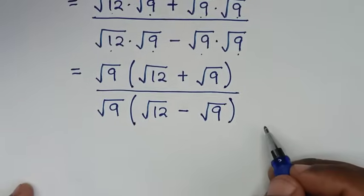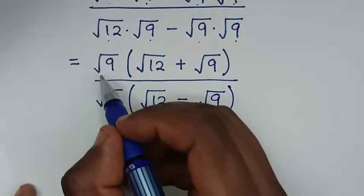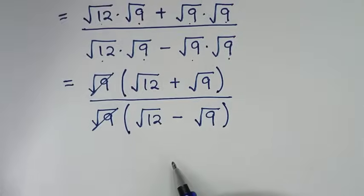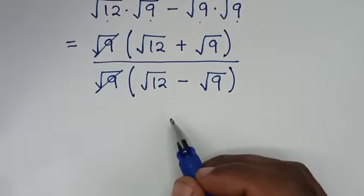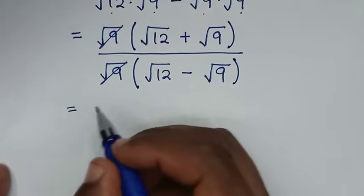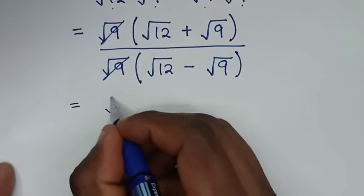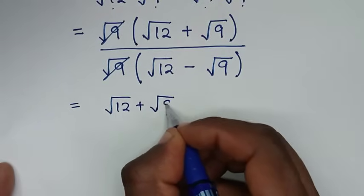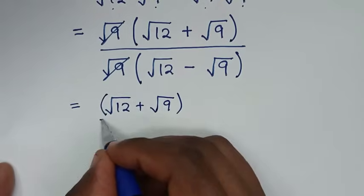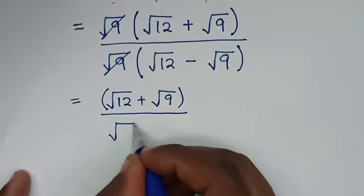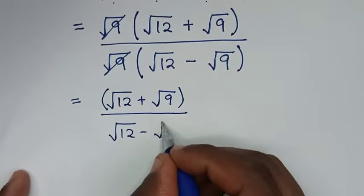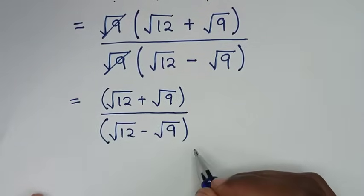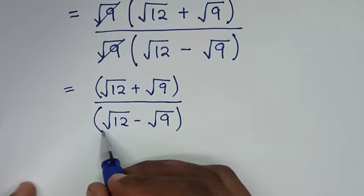In the next step, to simplify, square root of 9 in the numerator cancels with square root of 9 in the denominator, giving us (square root of 12 plus square root of 9) over (square root of 12 minus square root of 9).